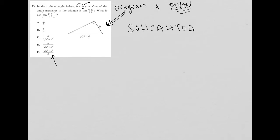Just as a reminder, TOA is tangent. So the tangent of an angle, let's say tan x, is equal to opposite over adjacent.